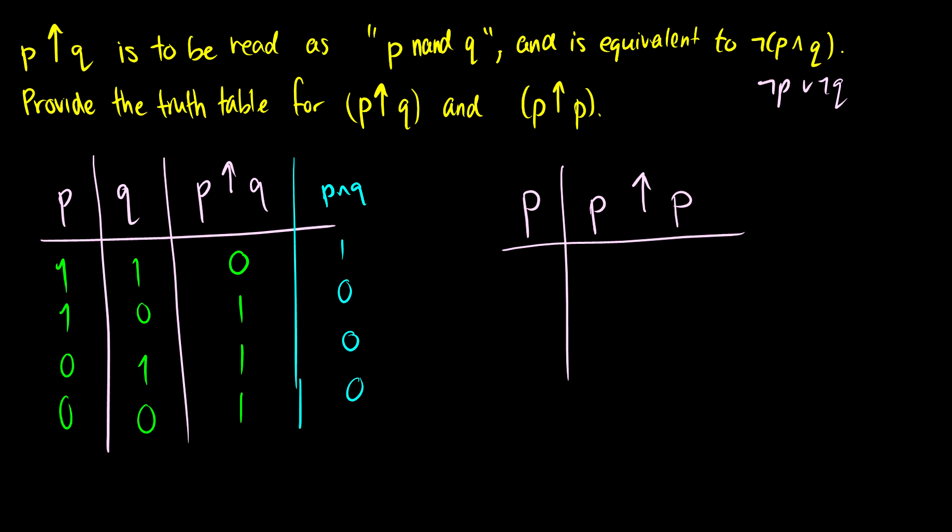Okay so let's do the truth table for p up p. If p is a 1, p can also be a 0. So if p is 1 then we're going to have 1 up 1 and that is going to be false. But if p is false then we have false up false and that's going to be true.